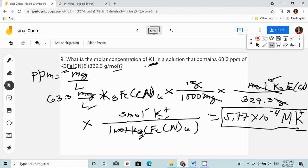Where did we get 3? Here, the subscript. We use that in every 1 mole of potassium ferricyanide, we have 3 moles of potassium.